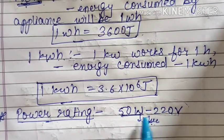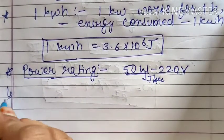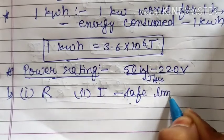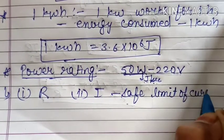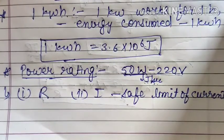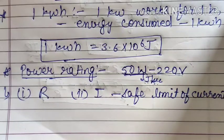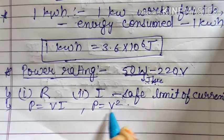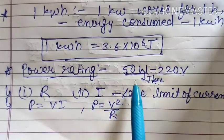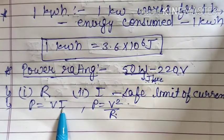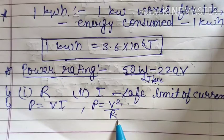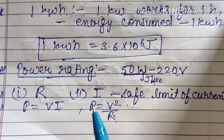The information written on the appliance helps us calculate two things: resistance and the safe limit of current. Using P = VI and P = V²/R — if you have power and voltage, you can calculate current I (the safe current limit) and resistance R. If the current exceeds this safe limit, the appliance can get damaged or burn, which is why we use an electric fuse.